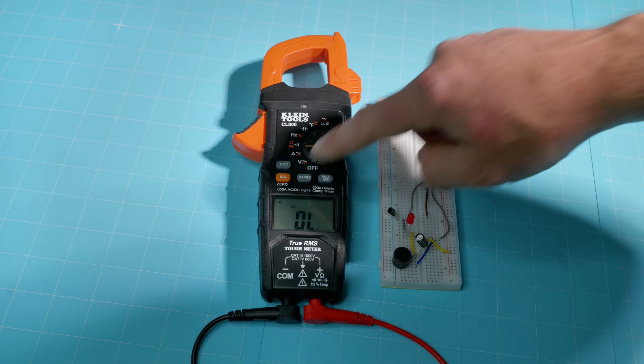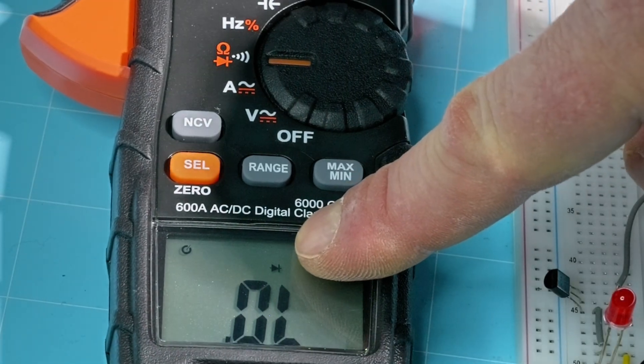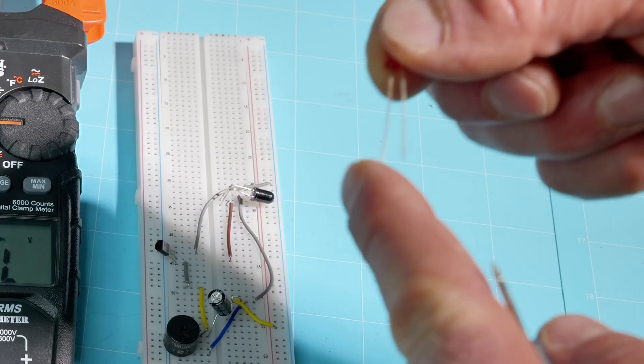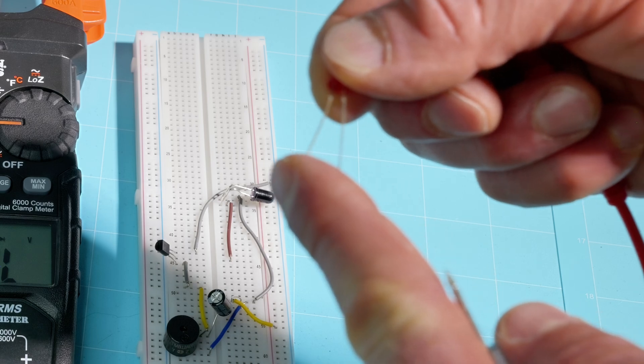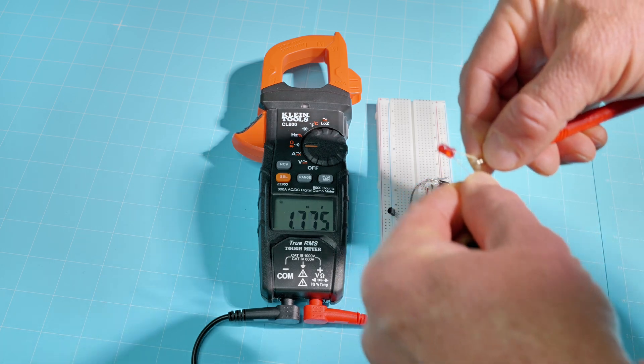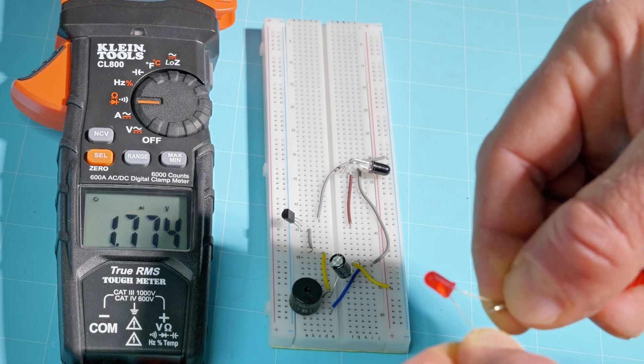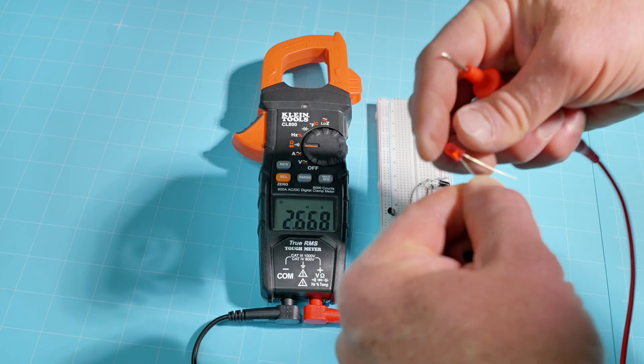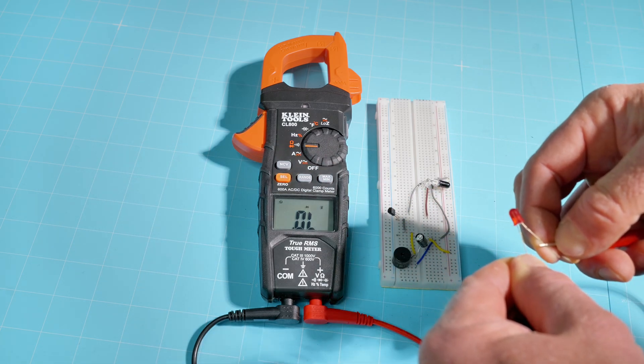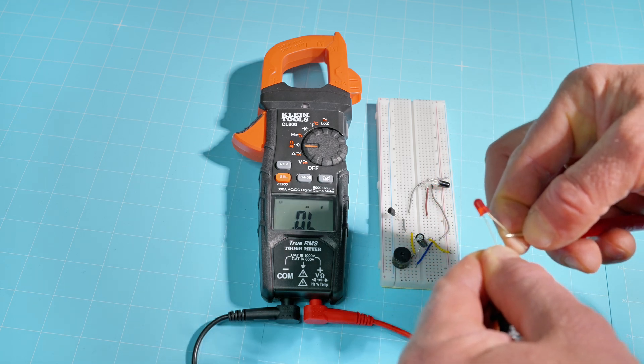To test the diode feature, we're going to hit our orange select button until we see the diode symbol right there. We'll pull off our light emitting diode here. Now diodes are directional. You'll notice that one lead is usually longer, one is shorter. We'll put the black lead on the shorter leg and the red lead on the positive longer leg. As you can see, we have about 1.774 volts. Flip the diode over and read it backwards. We should be getting an open, just like we see there, because diodes are directional. They only allow current to flow in one direction.